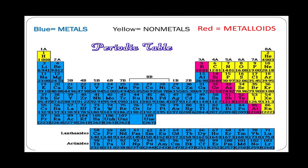The squares colored blue are the metals, the yellow ones are the non-metals, and the red ones are the metalloids. As you can see, most elements are metals and are placed on the left side of the periodic table, except for hydrogen. On the right side are the non-metals, separated by a stair-like pattern of elements, which are the metalloids or semi-metals.